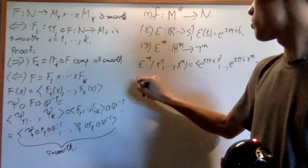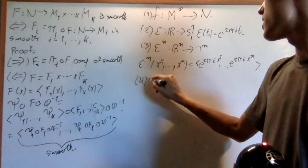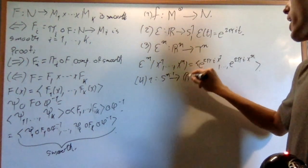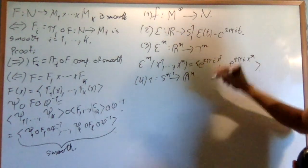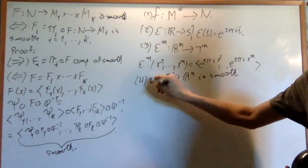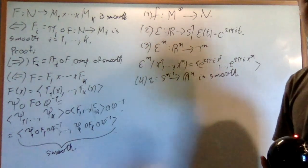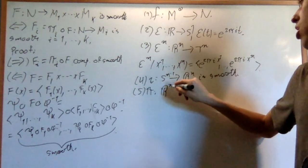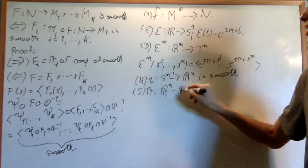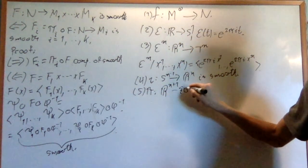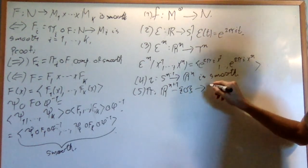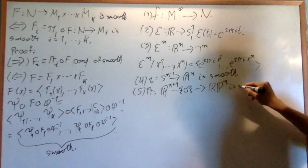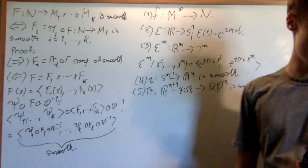Two more examples: the inclusion map from S^{N−1} into ℝ^N is smooth (easy to check but I won't prove it). And the quotient map from ℝ^{N+1} minus the origin into real projective space ℝP^N is smooth. Those are five nice examples.